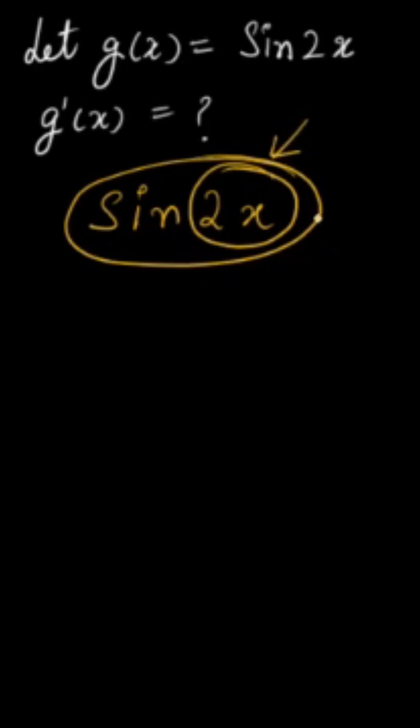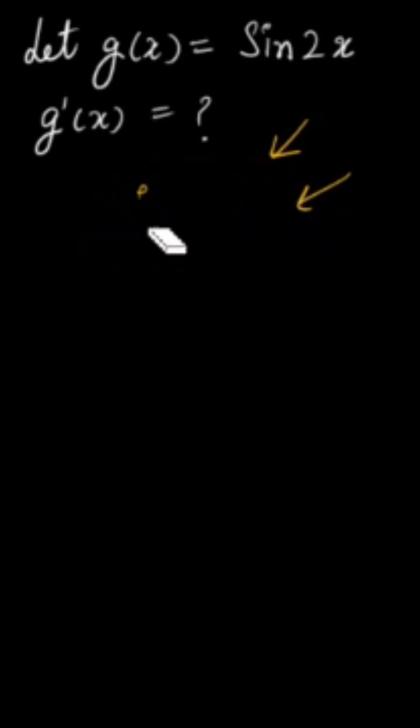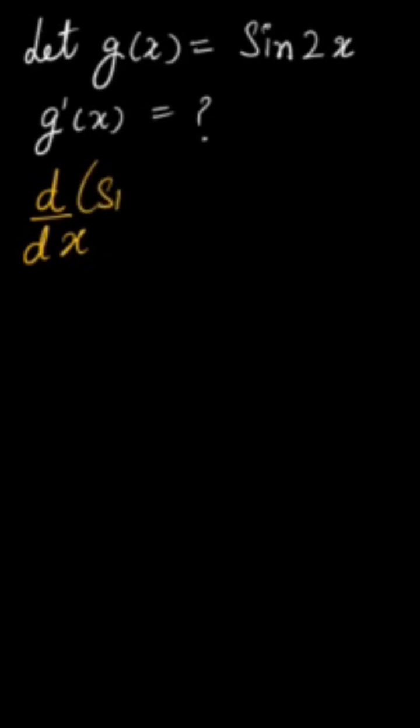First of all you have to find derivative of sin 2x. When outer one you are considering, full function you have to consider. Inner one, only this part. So how we will write? We will write d by dx of sin 2x, then d by dx of 2x.